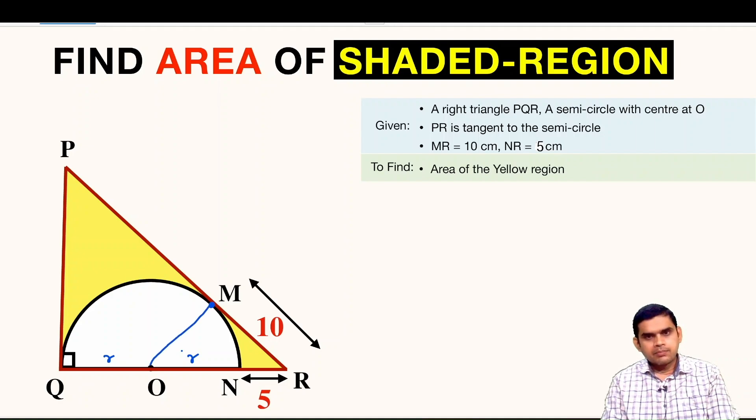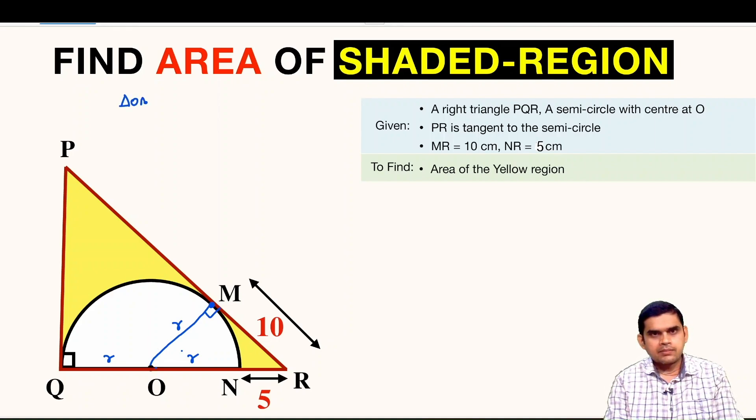Now let us join this point M with center O. Because PR is a tangent, this is going to be perpendicular and this is also the radius of this semicircle. Now let us focus on this triangle OMR. So in triangle OMR...